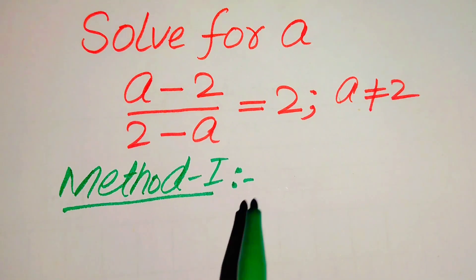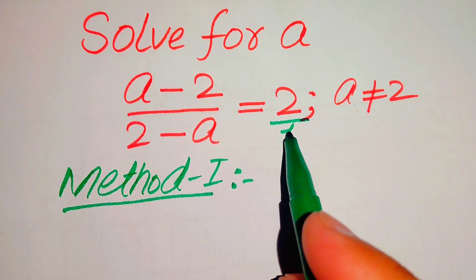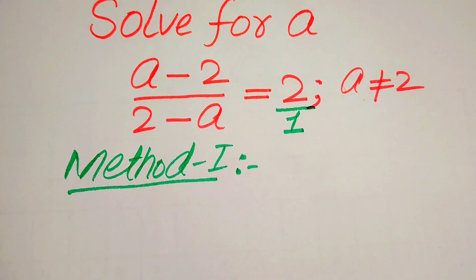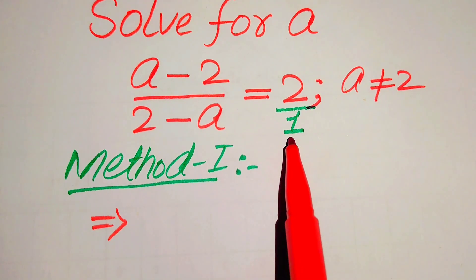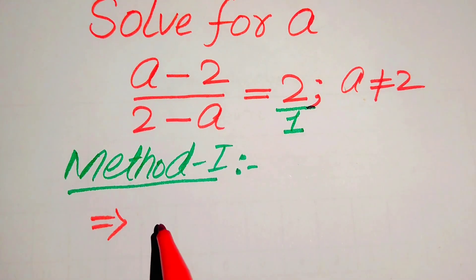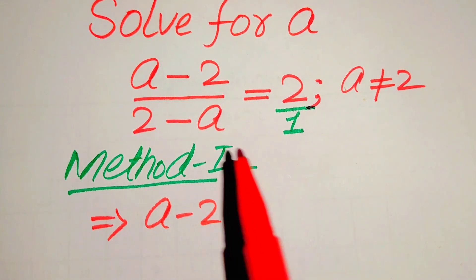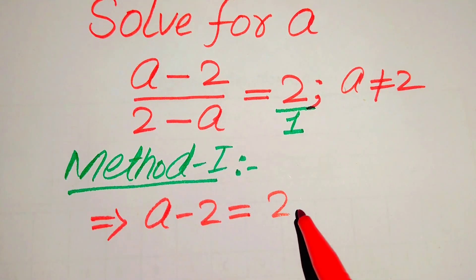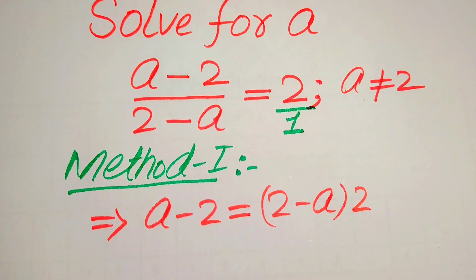In the first method, on the right hand side we have 2 and the denominator of this term is 1. Now we need to cross multiply the terms. When we cross multiply, we multiply 1 with (a minus 2) and it becomes a minus 2, and we multiply (2 minus a) with 2, giving us (2 minus a) times 2.